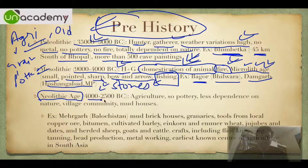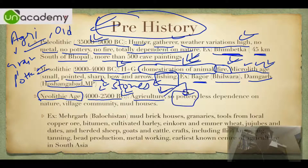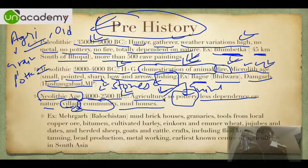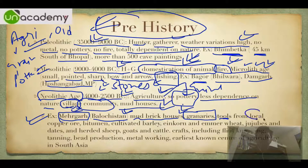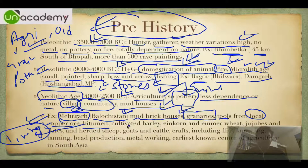Then we have the Neolithic era, lasting from 4,000 to 2,500 BC. Most importantly, agriculture developed. With agriculture came pottery, as grains also developed. People became less dependent on nature. Villages and communities developed, and they started to live in mud houses. The most important Neolithic site is Mehargad in Balochistan, Pakistan. They lived in mud brick houses, developed granaries, made tools from local copper ore, and used bitumen for lining purposes.